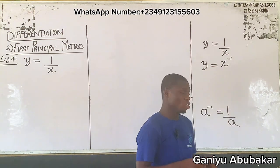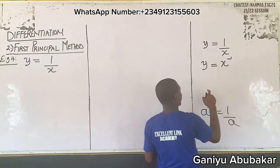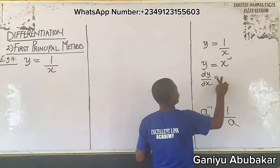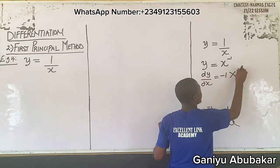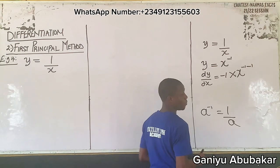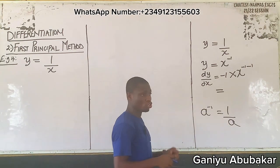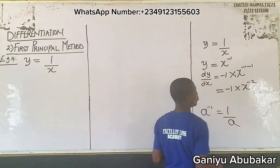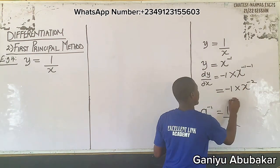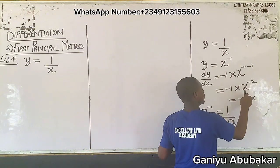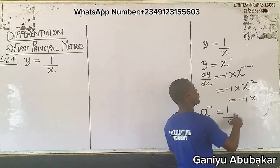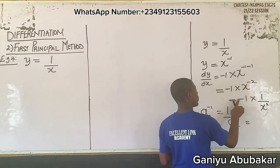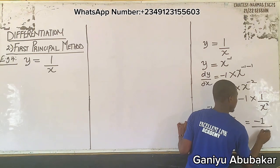Now I can solve it using the general method. The concept says: multiply by the power. So dy/dx equals minus one times x to the power of minus one minus one, which is x to the power of minus two. Minus one times x to the minus two gives minus one over x squared, applying the indices concept.